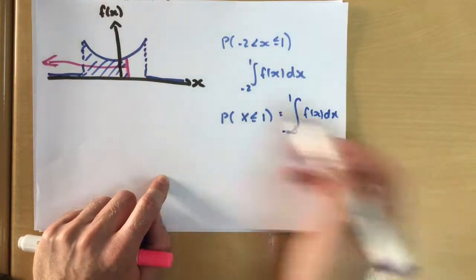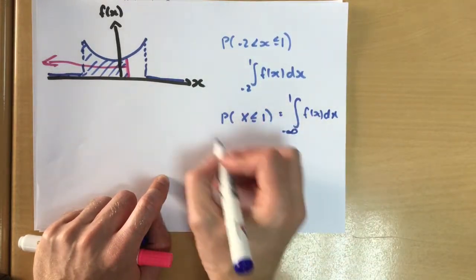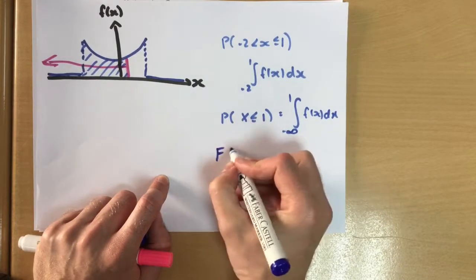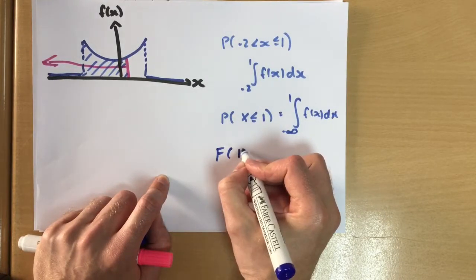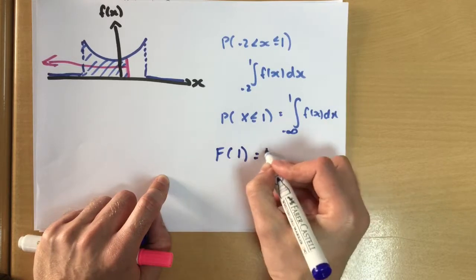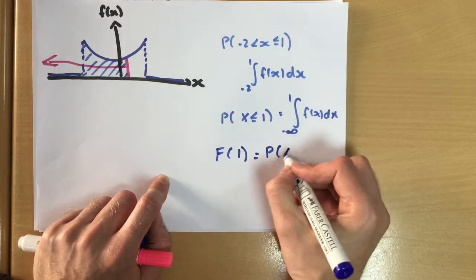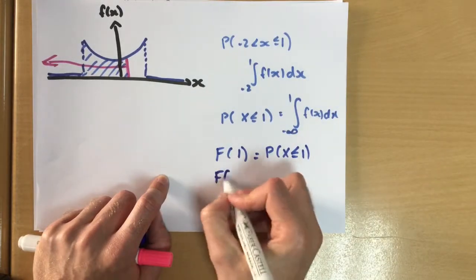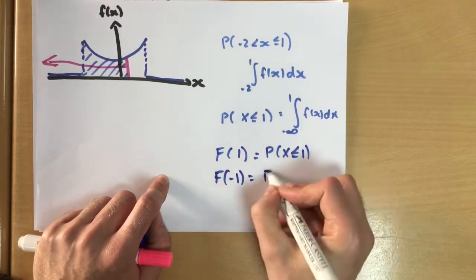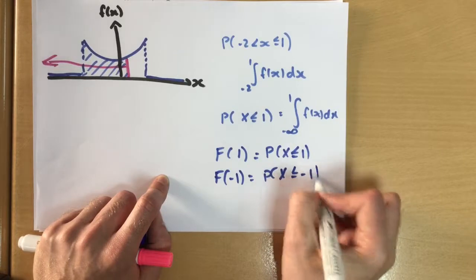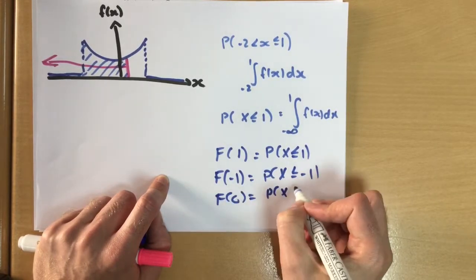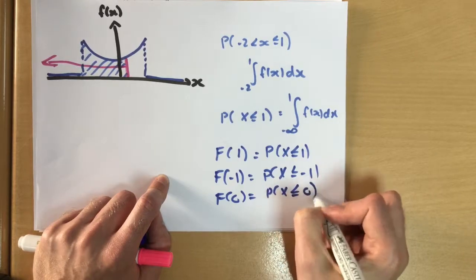Now we have a cumulative notation for this. So if I wrote down that, what that means is the probability that x is less than or equal to one. So if I wrote for example f minus one, that means less than or equal to negative one. If I wrote f zero, it means the chance that x is less than or equal to zero.